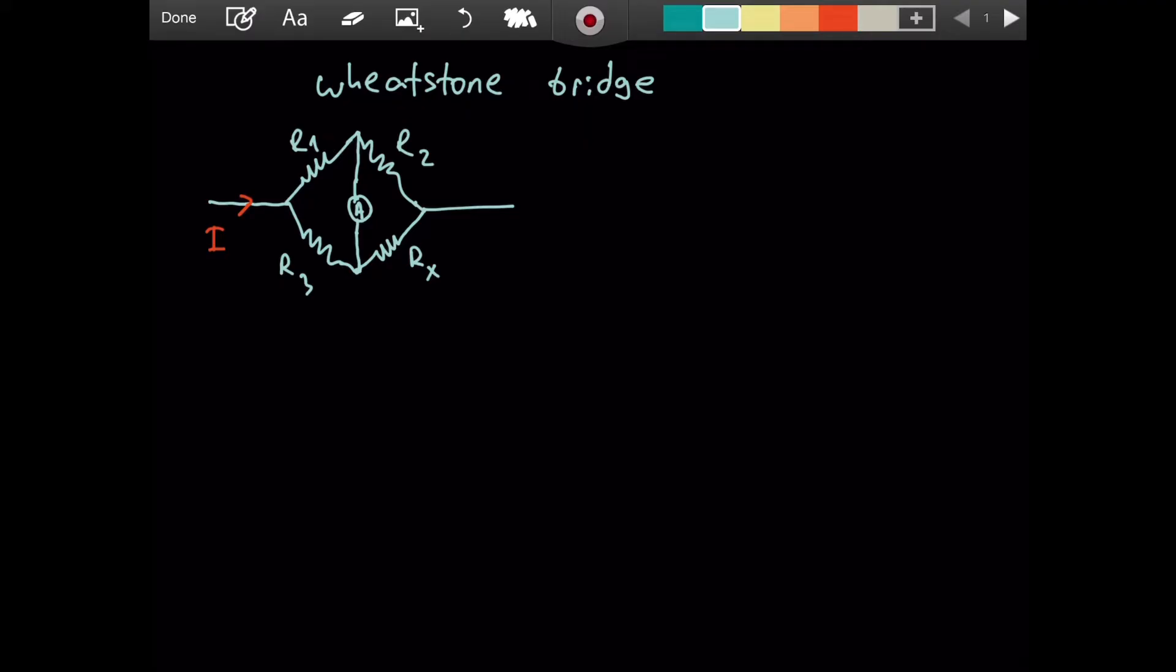Now, our condition for a Wheatstone bridge is that this ammeter shows zero current. We want the central wire to have zero current passing through it.